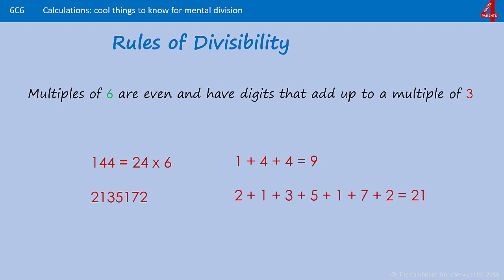Here we have 2,135,172. The digits add together to make 21. 21 is a multiple of 3. Even though 21 is odd, the number we started with — 2,135,172 — is an even number. You can tell because there's a 2 in the ones or units column, so that number must be a multiple of 6.